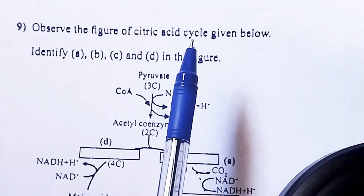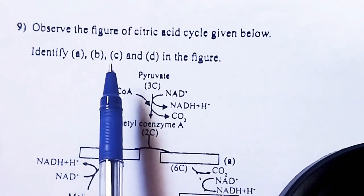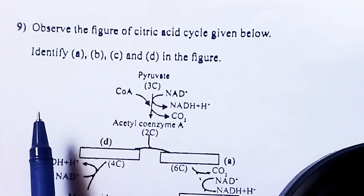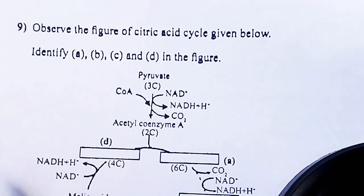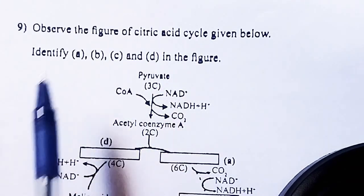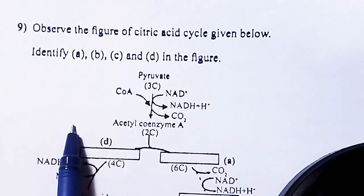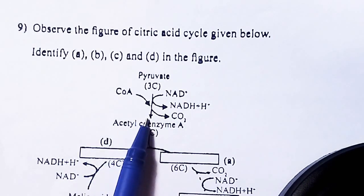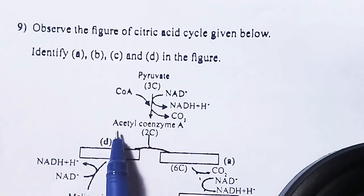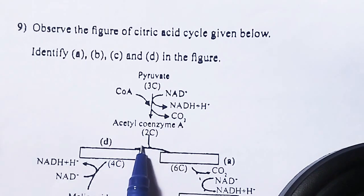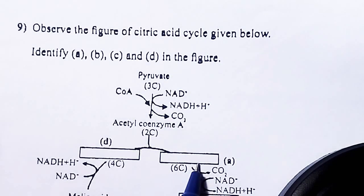Observe the figure of the citric acid cycle given below. Identify A, B, C, and D in the figure. Proteins, carbohydrates, and lipids are converted into pyruvate. Pyruvate is a 3-carbon compound. A is a coenzyme, B is carbon dioxide, which is also a coenzyme.